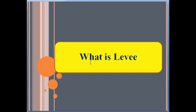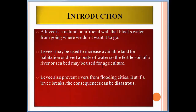Today we talk about what a levee is and how a levee forms. A levee is a natural or artificial wall that blocks water from going where we don't want it to go. Levees may be used to increase available land for habitation or to divert a body of water so that the fertile soil of a river or seabed may be used for agricultural purposes.